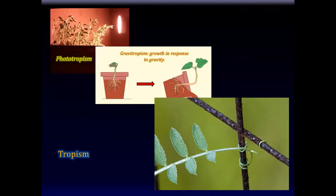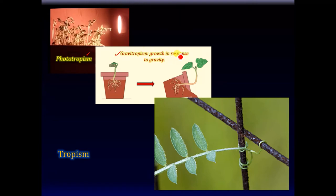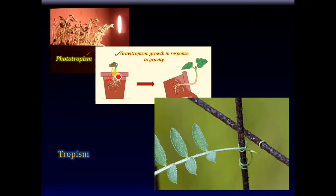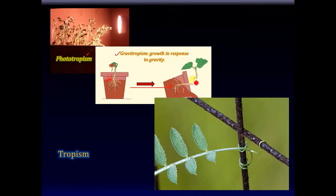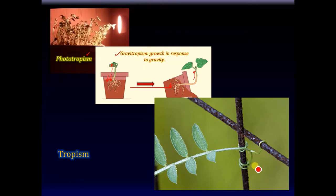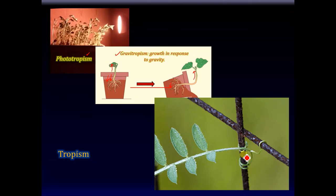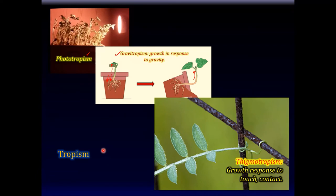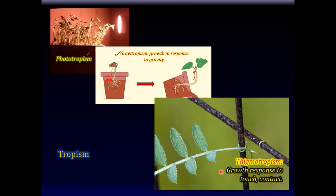Here are some examples of tropisms. Besides phototropism, there is graviotropism — a growth response to gravity. The roots always grow towards the ground and the shoot always grows away from the ground. Even if the pot were turned sideways, the roots would find their way towards the ground and the stem would grow upwards against gravity. The twirling of a vine against adjacent structures is another example — thigmotropism, a growth response to touch or contact. So: phototropism with stimuli of light, graviotropism with stimuli of gravity, and thigmotropism with stimuli of touch.